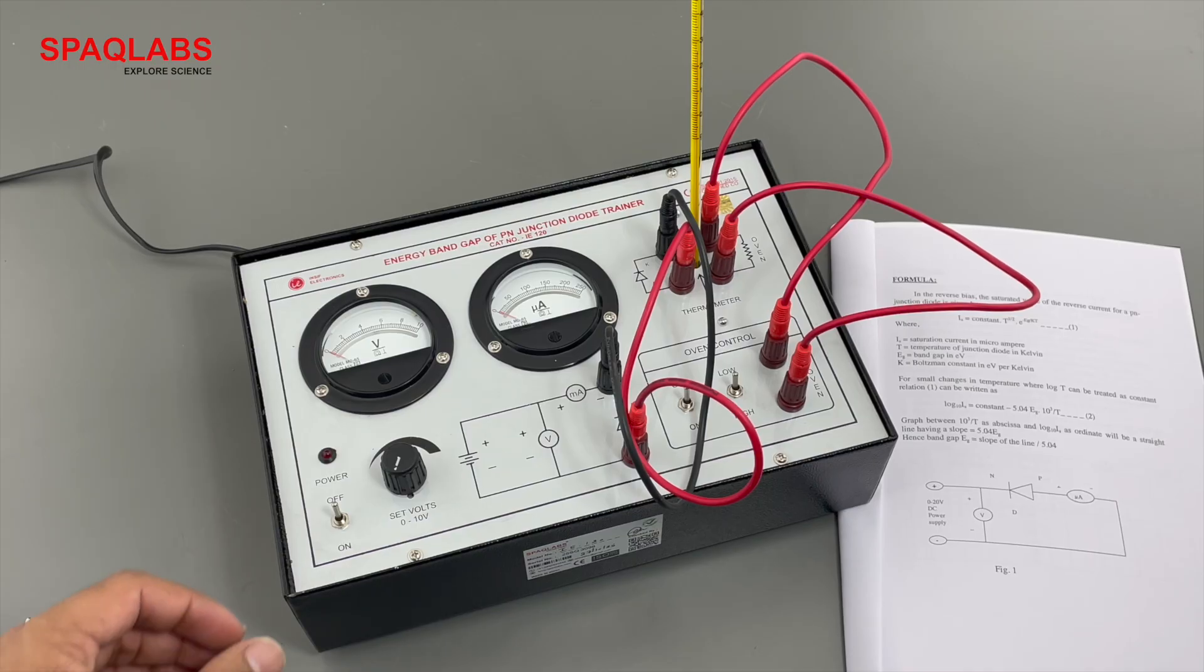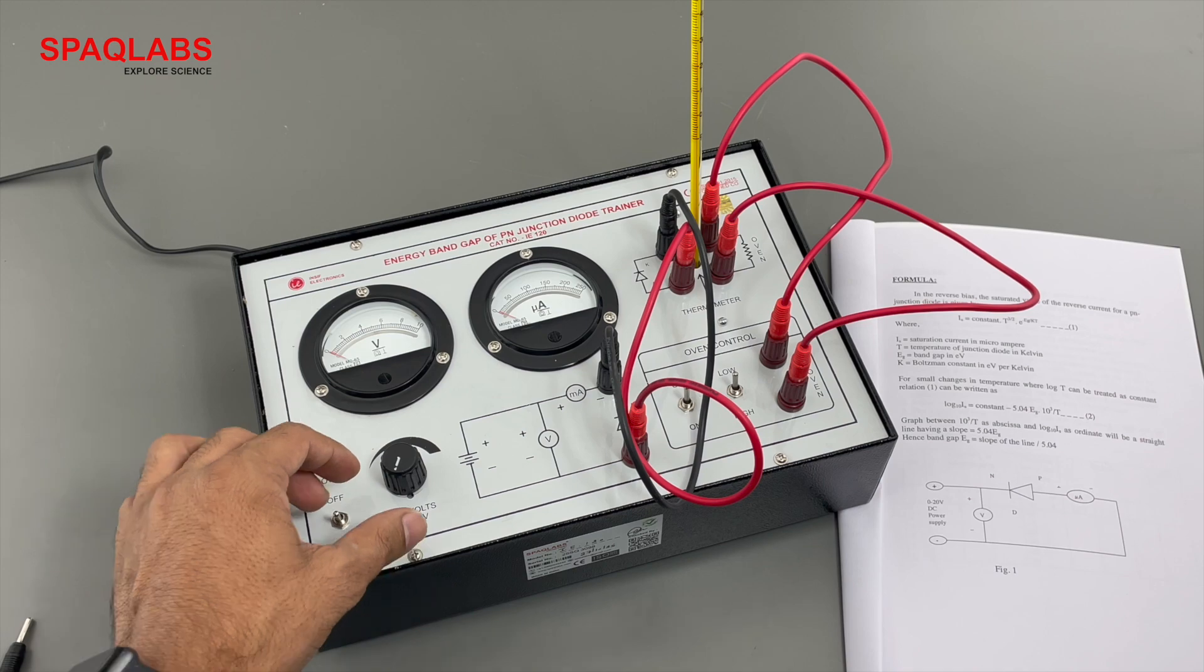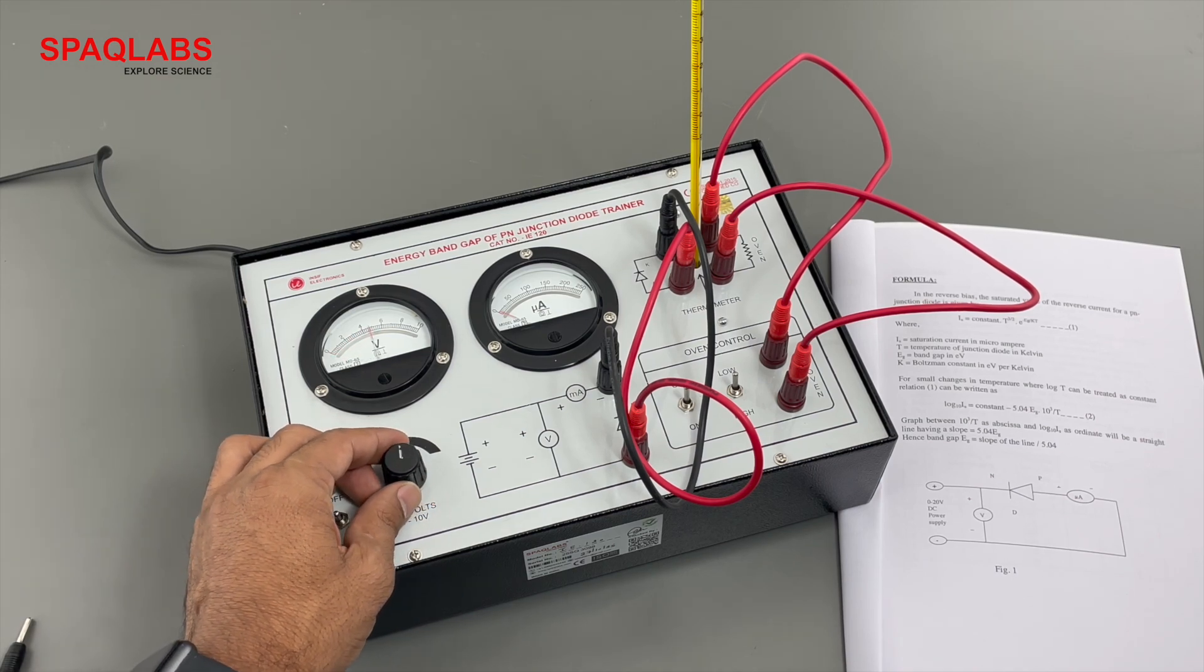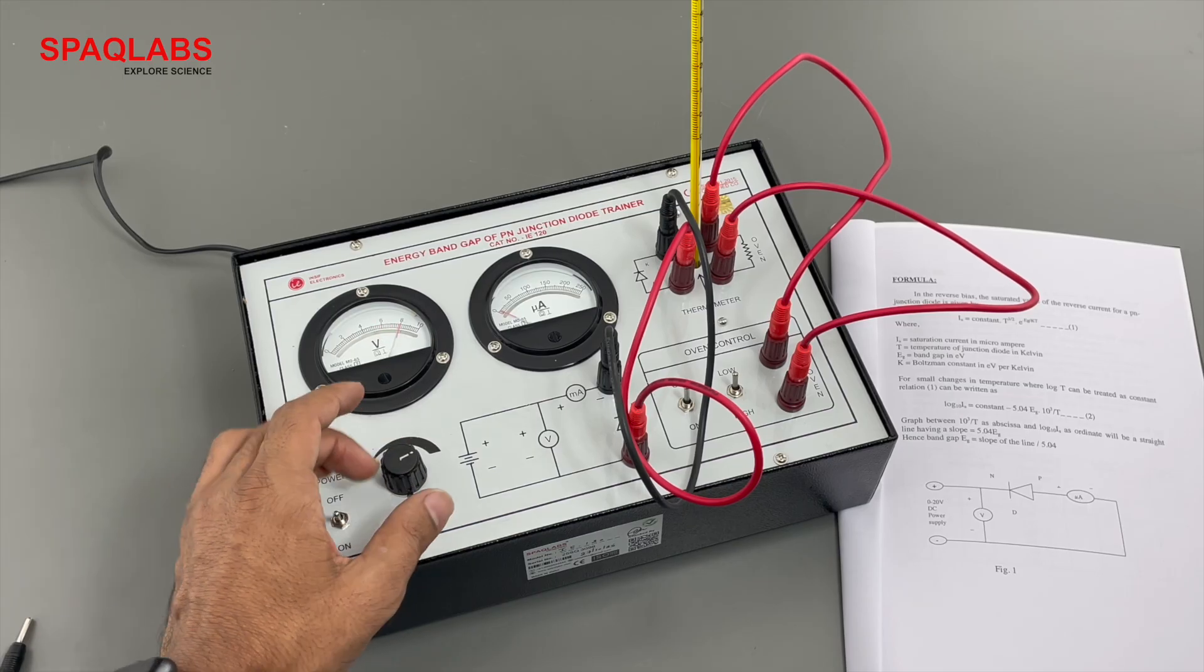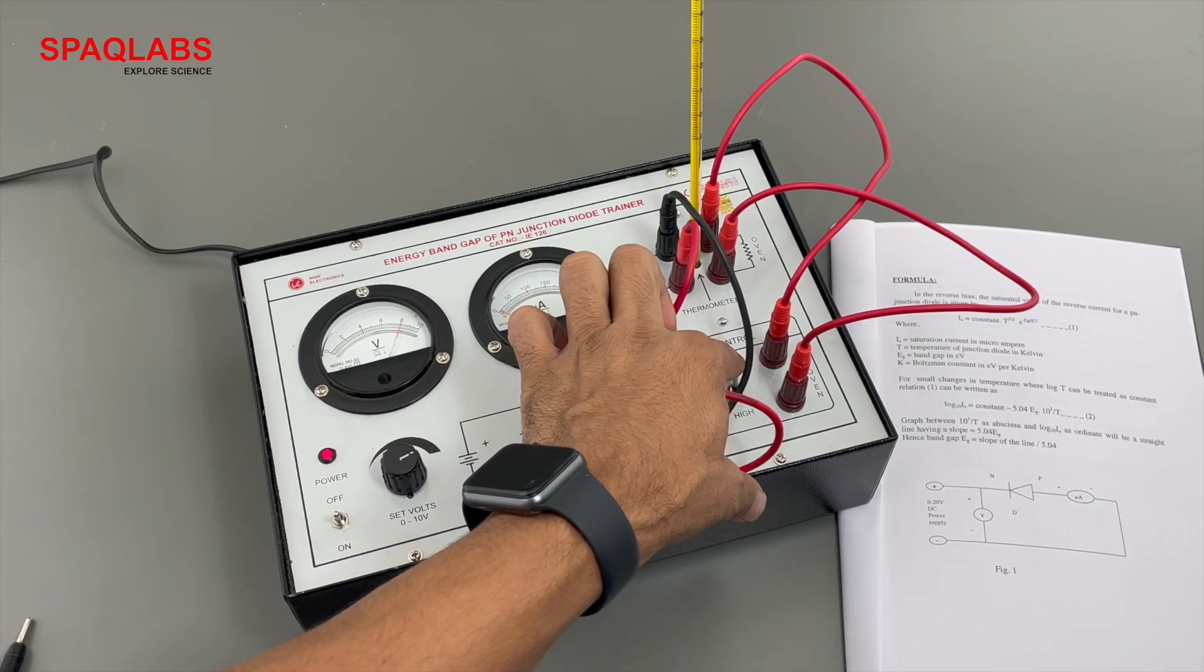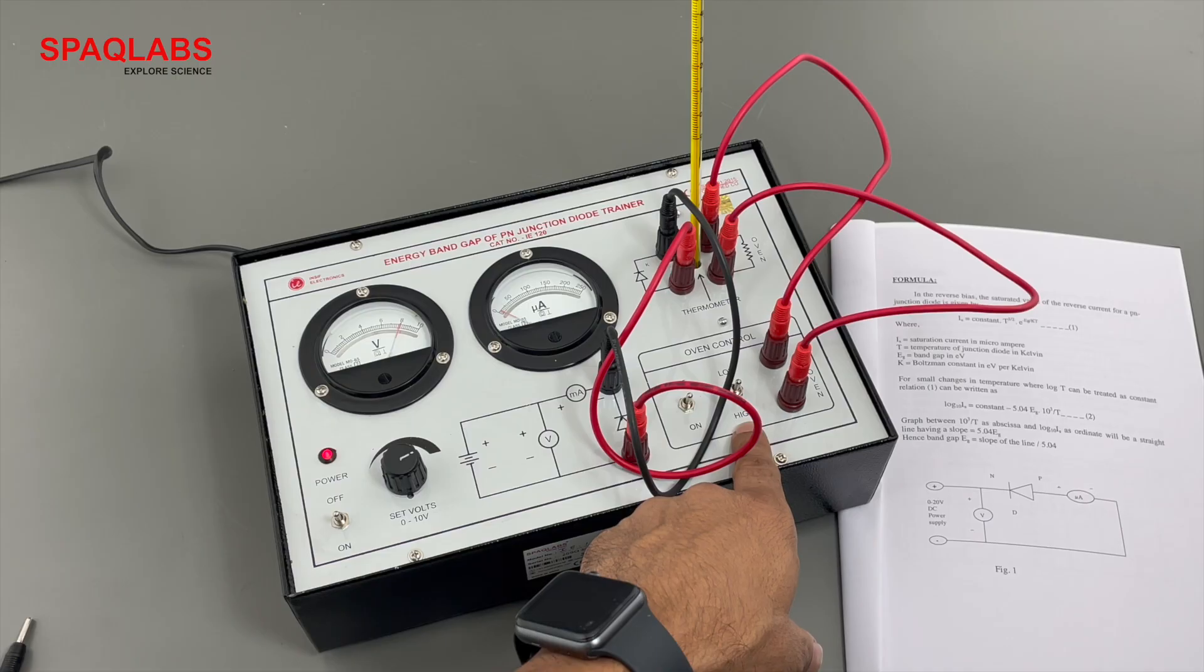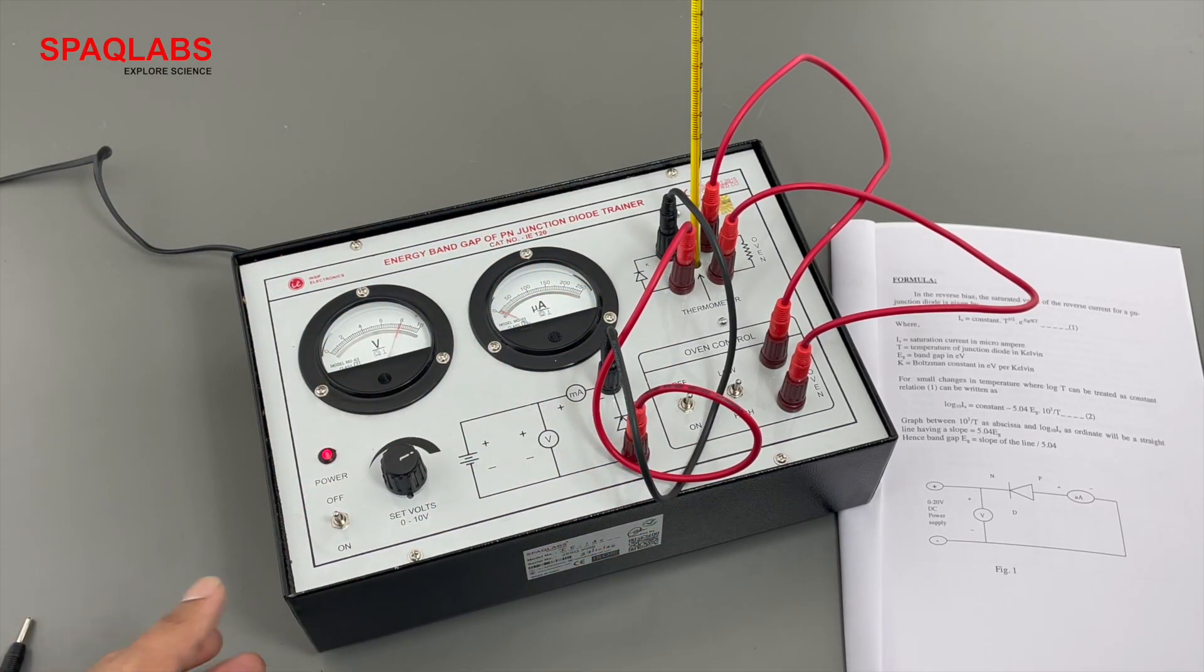Now we are going to switch it on and set the power supply to, let's say, 8 volts. Now switch on the O1. You can set it to high or low mode - at low mode it will heat slowly, at high mode it will heat faster.